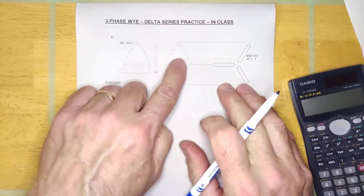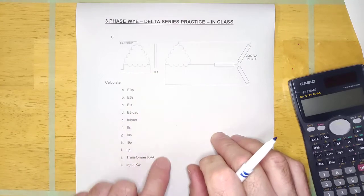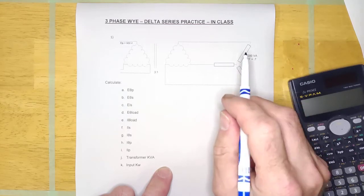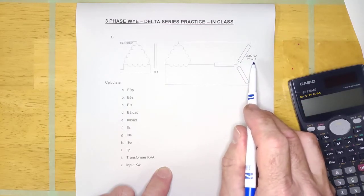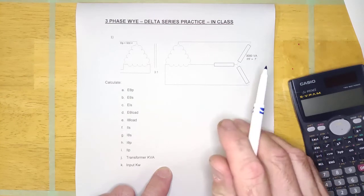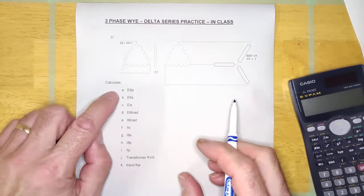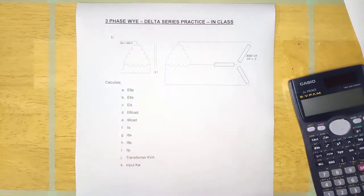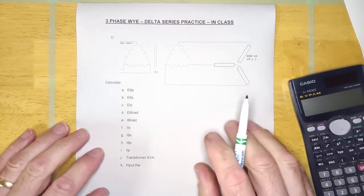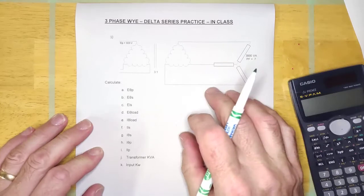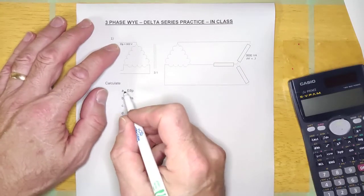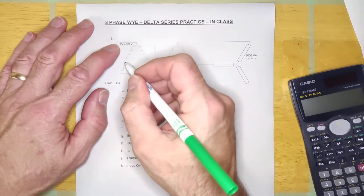We still have a transformer — looks like it's three-to-one, looks like it's delta-delta, and we have a Y-connected load. Notice that the load is unknown, meaning there's some kind of load here, but it shows a power factor of 0.7 and it's 3000 VA. The first thing we're going to calculate is the voltage all the way to the load. The primary line voltage is 900 volts. Question A asks for E-phase primary.